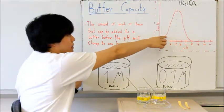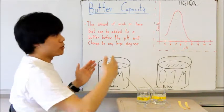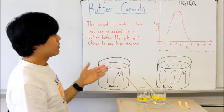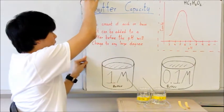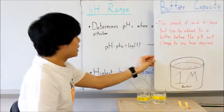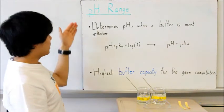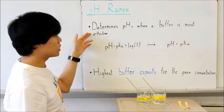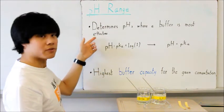And this graph over here is a graph showing the buffer capacity of acetic acid at given pHs. Now, this leads us to our next slide, which is the pH range of a buffer. The pH range is a way of determining buffer capacity, and it determines which pHs the buffer is most effective.